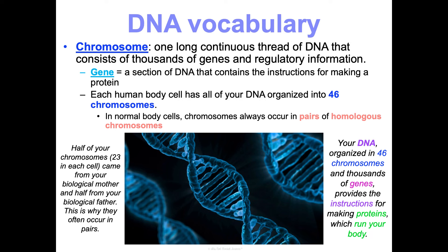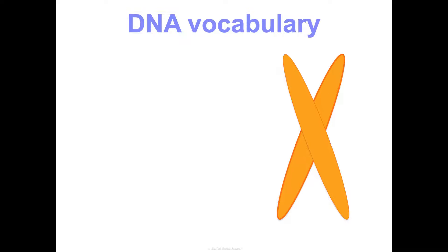In summary, your DNA is organized into 46 chromosomes and thousands of genes, and those genes provide the instructions for making proteins, which run your body.